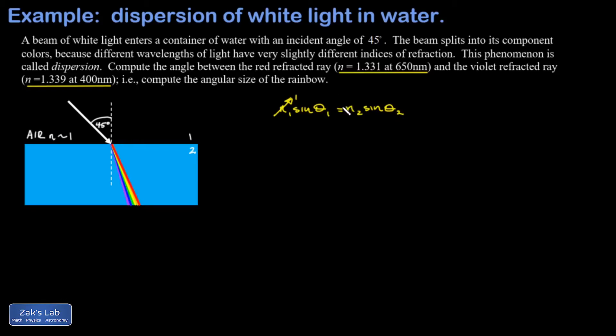So we get sine theta 2 is 1 over n2 sine theta 1, and then we invert the sine function and we find our refracted angle theta 2 in general. That's going to be the inverse sine of 1 over n2 sine theta 1. So then we just look at the red light